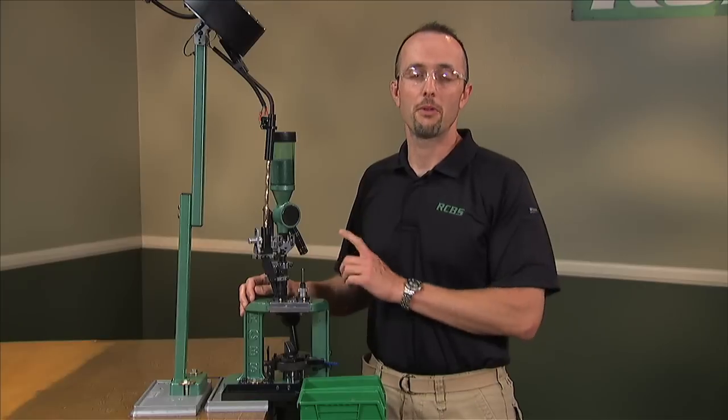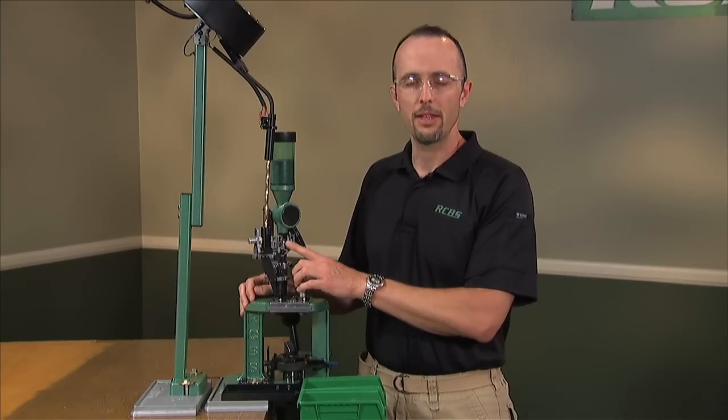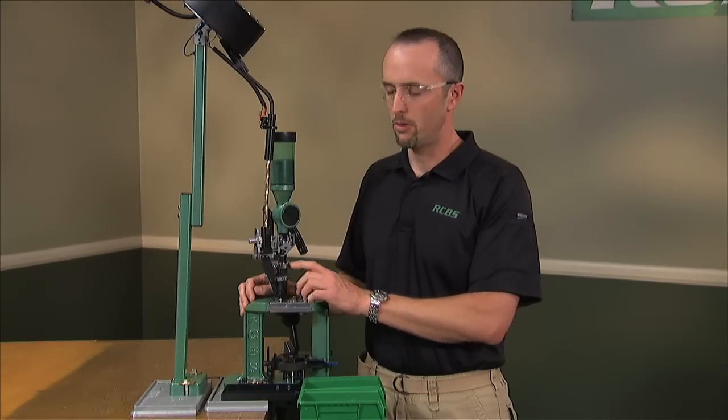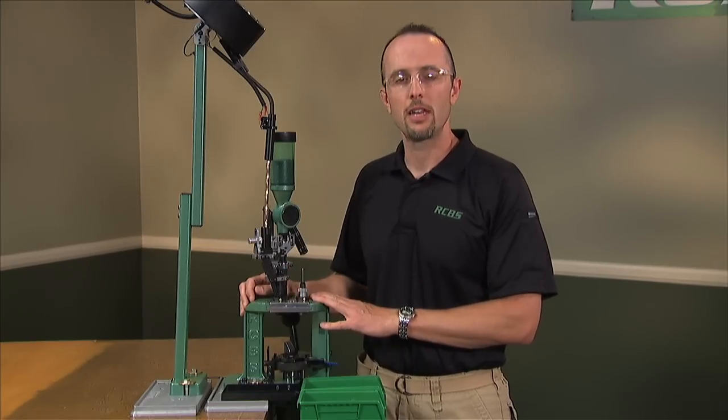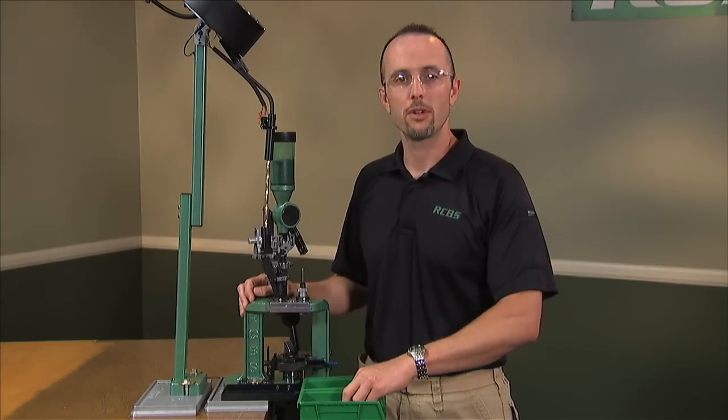A unique feature about the rifle bullet feeder is that the bullet drop mechanism is actuated by the case activated powder measure. So if there's no case present, the drop mechanism will not function. This press is set up to load 223 Remington rifle, so let's get a demonstration going.